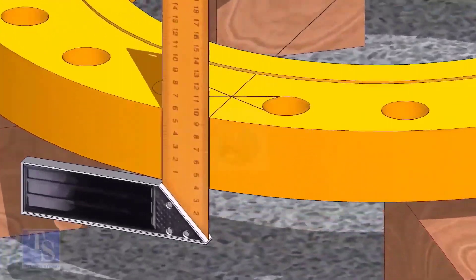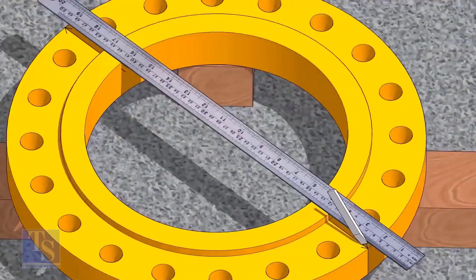Now, transfer the center line to the sides of the flange. Overturn the flange and transfer the center line on the back side of the flange.